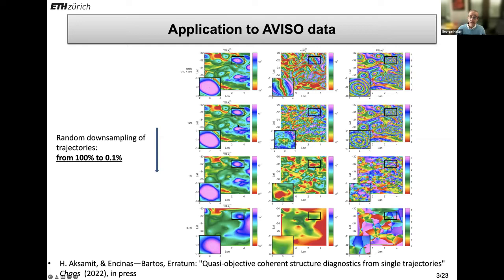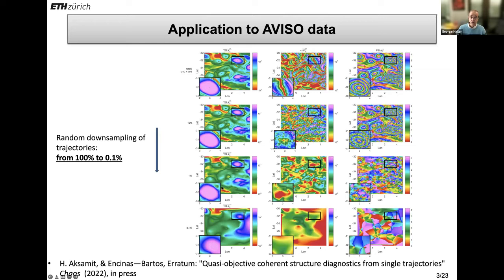So what we did: we downsampled the set of trajectories from 100% to 10%. This is a factor of 10. And you see the TRA is pretty robust. Part of the reason is that just because you downsample the trajectory, the diagnostic doesn't change because it only depends on individual trajectories. But dispersion takes a major hit — just look at that. PRA is holding up actually pretty well but getting fuzzy. Then you downsample to 1% — these downsamplings are random, throwing out 90% of the trajectories. TRA is surprisingly robust and captures the same feature. Dispersion is becoming a mess, and so is PRA — very pixelated. And finally at 0.1% we're still getting the ghosts of these structures.